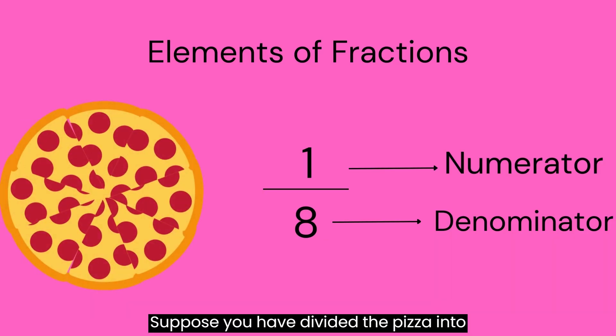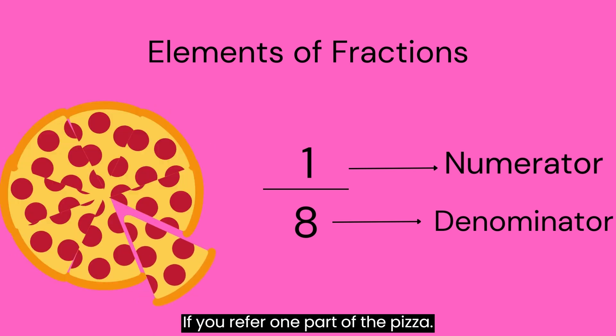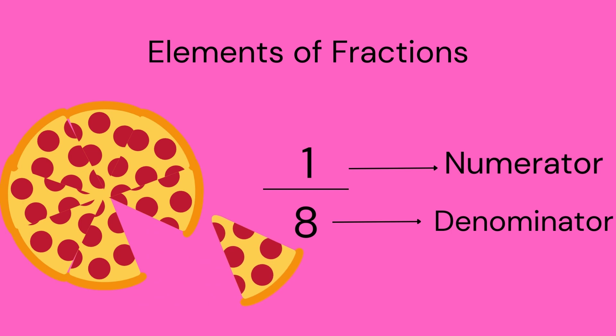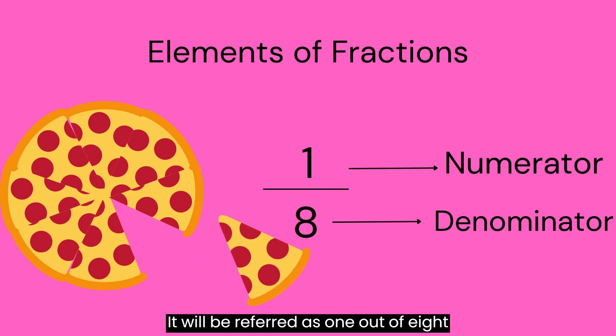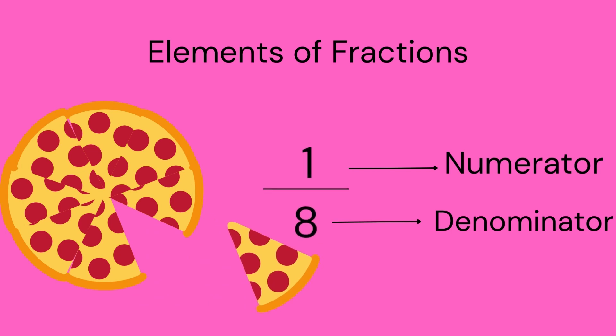Suppose you have divided the pizza into eight parts. If you take one part of the pizza, it will be referred to as one out of eight, or simply one by eight.